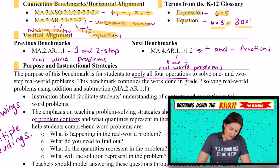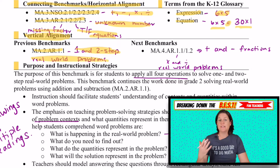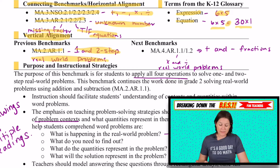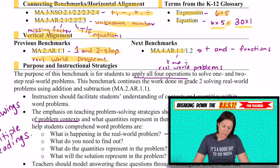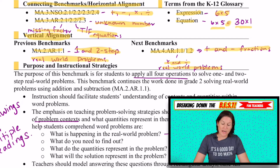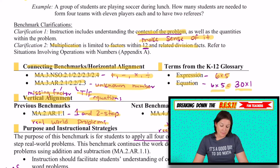Vertical alignment — where are students coming from? In second grade, they did one- and two-step real-world problems, mostly with adding and subtracting. So we're adding the element of multiplication and division this year. And then in fourth grade, AR.1.1 is multiplying and dividing real-world problems, and 1.2 is adding and subtracting fractions.